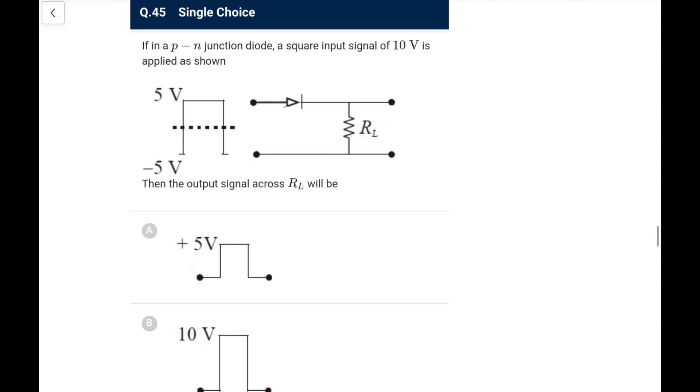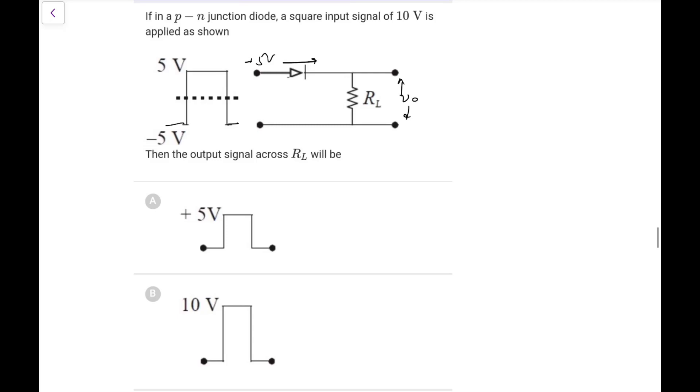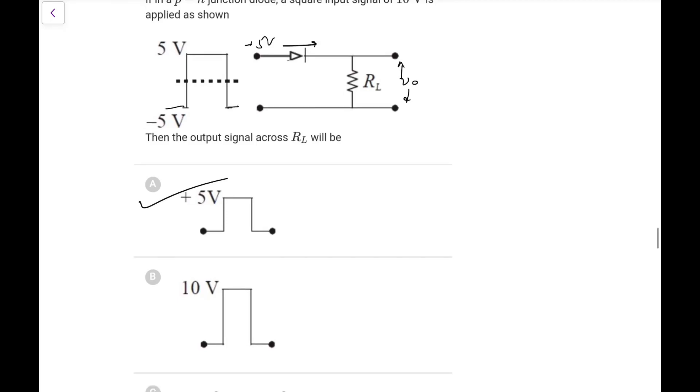Now in a PN junction diode, the square input signal of 10 volt is applied. So here what you will see, when it is plus 5, this would be forward bias. So you will see this 5 volt across in the output. So output will show 5 volt. And when it is minus 5, it will be reverse bias, no current flows through R_L, output will be 0. So output would be plus 5 only for this duration. So go for option A here.